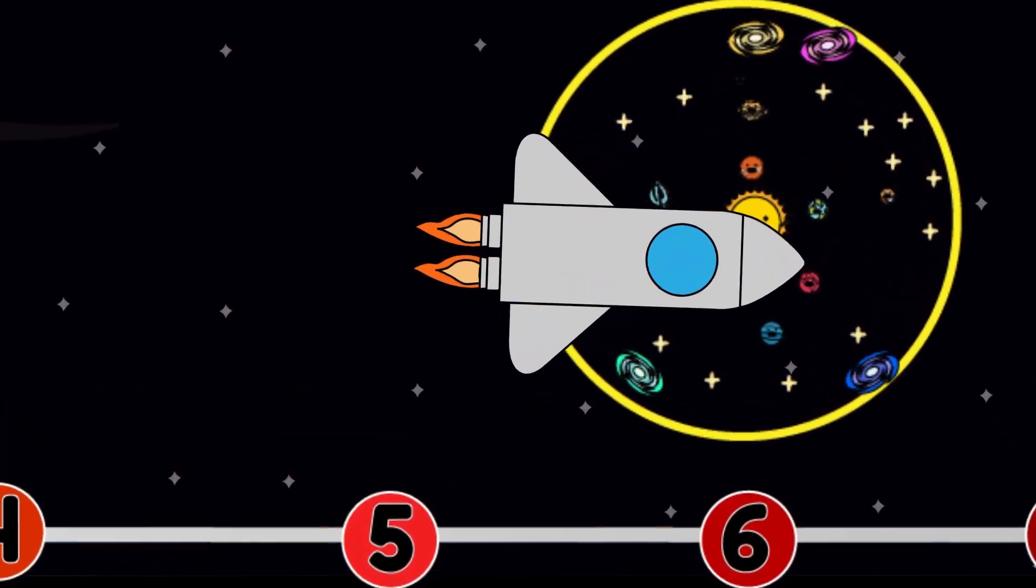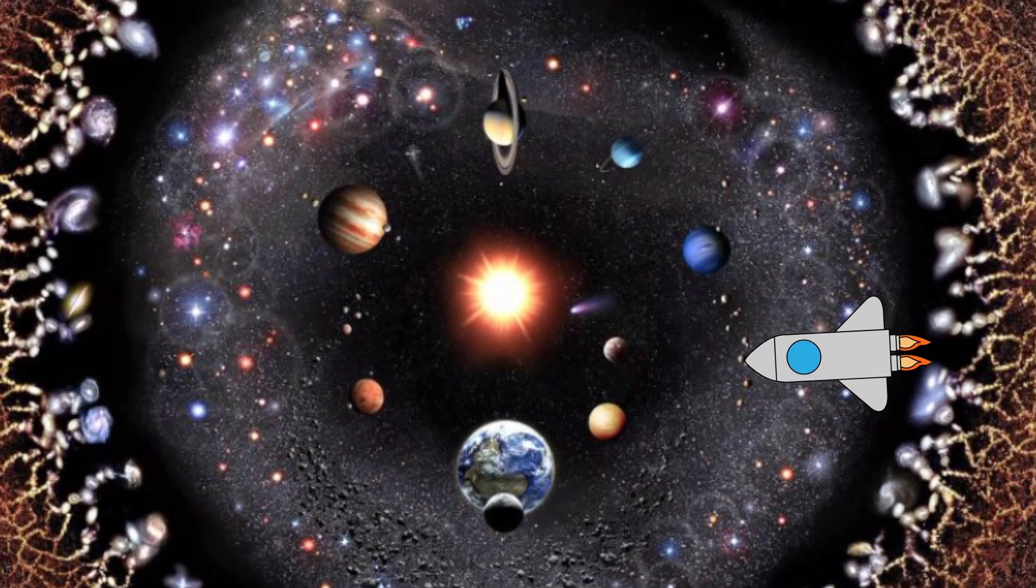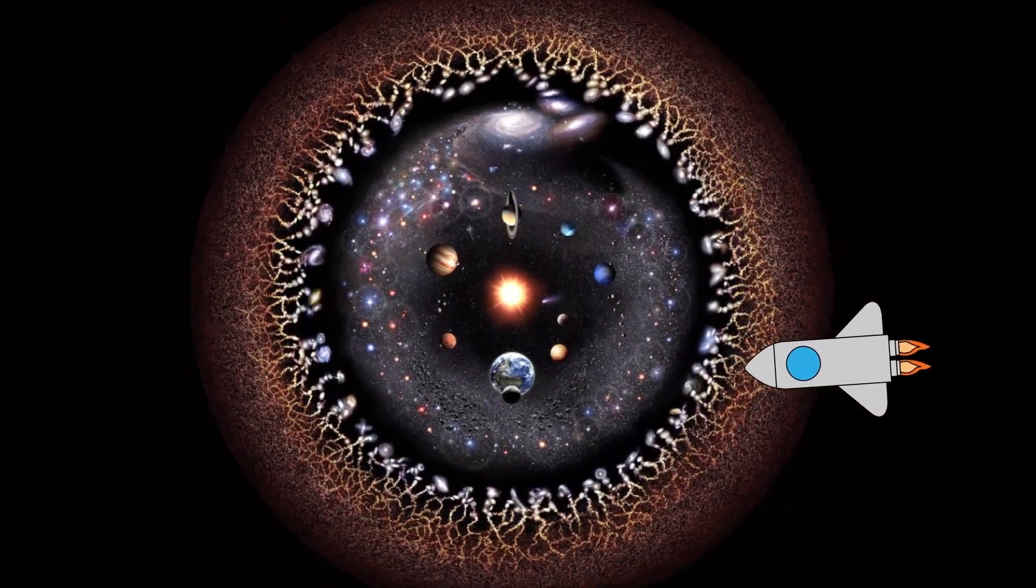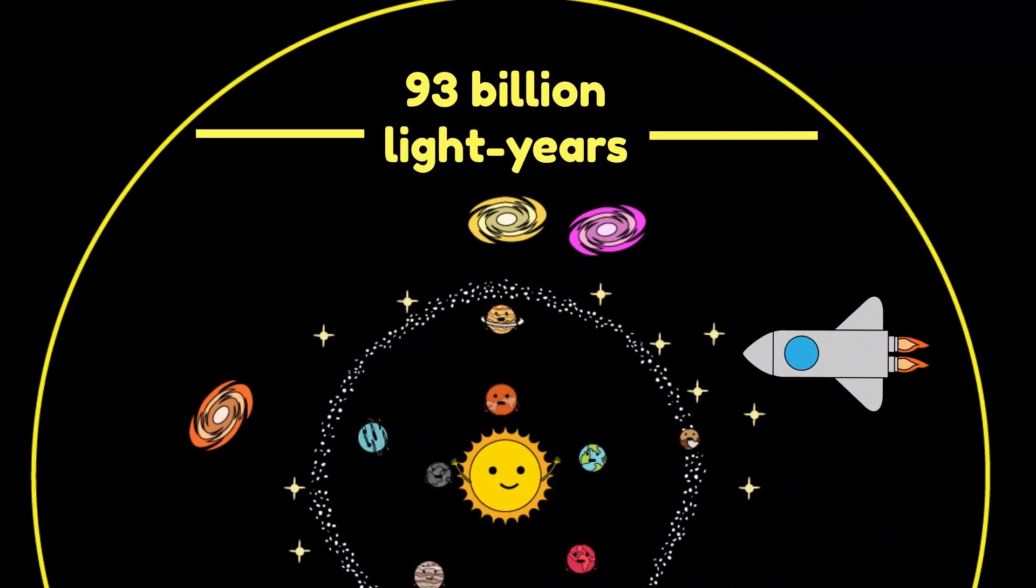Level 6. The Observable Universe. Okay, time for the big reveal. Everything you can see, every galaxy, every particle of light, is trapped inside this bubble. The observable universe. 93 billion light years wide. You're not looking out. You're looking back.